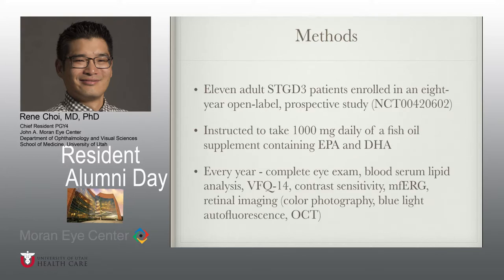To help answer this question, we enrolled 11 adult patients with dominant Stargardt's in an 8-year open-label prospective study. They were instructed to take 1,000 mg daily of fish oil supplement containing EPA and DHA. Each year we performed a complete eye exam, blood serum lipid analysis, a questionnaire, contrast sensitivity testing, multifocal ERG, and retinal imaging including color fundus photos, fundus autofluorescence, and OCT.